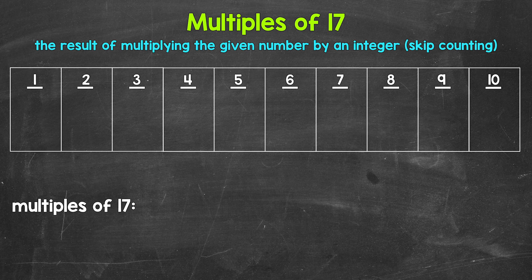Another way to think about multiples is to skip count. So all of the numbers something is going to hit when counting up by that number, those are all going to be multiples.